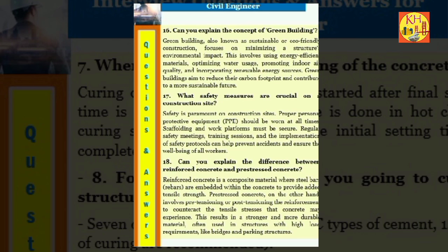Question 17: What safety measures are crucial on a construction site? Safety is paramount on construction sites. Proper personal protective equipment (PPE) should be worn at all times. Scaffolding and work platforms must be secure. Regular safety meetings, training sessions, and the implementation of safety protocols can help prevent accidents and ensure the well-being of all workers.